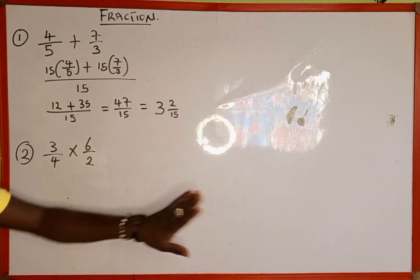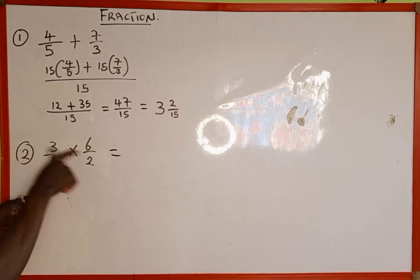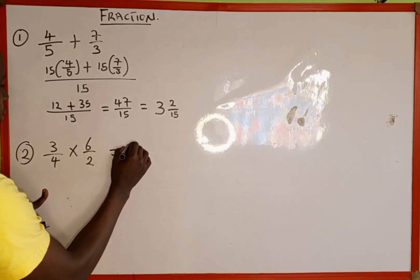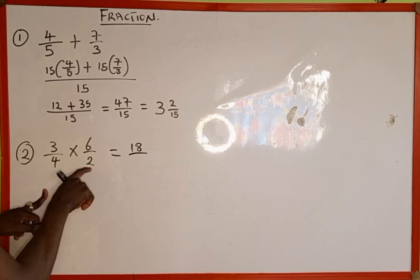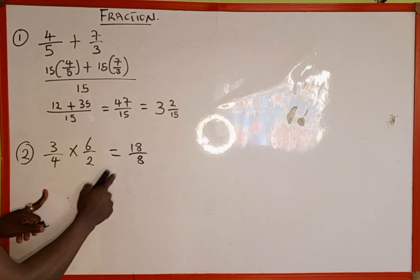What we do is just multiply the numerators and multiply the denominators. It's as simple as 3 multiplied by 6 is going to give us 18, divided by 4 multiplied by 2, which is going to give us 8.